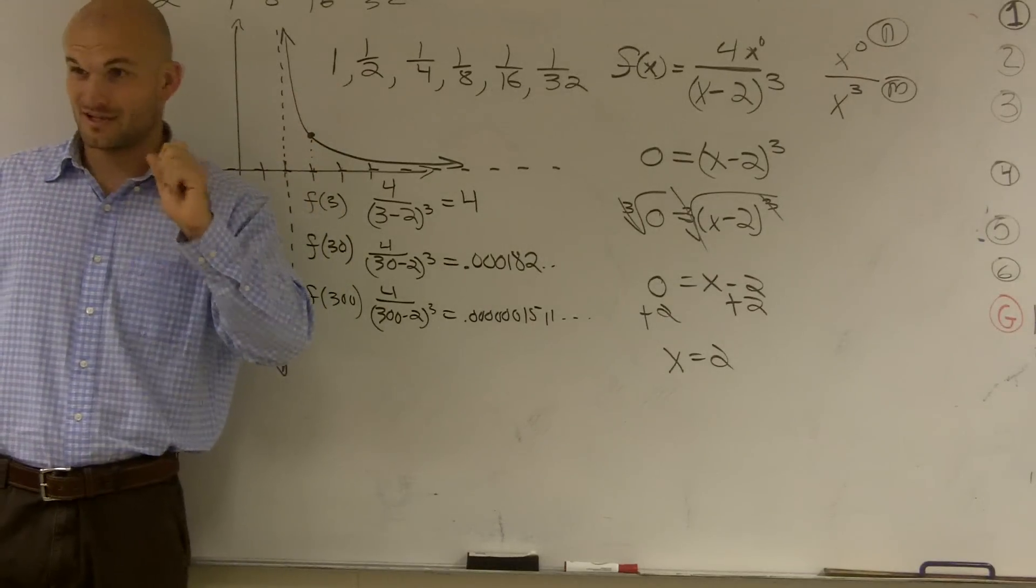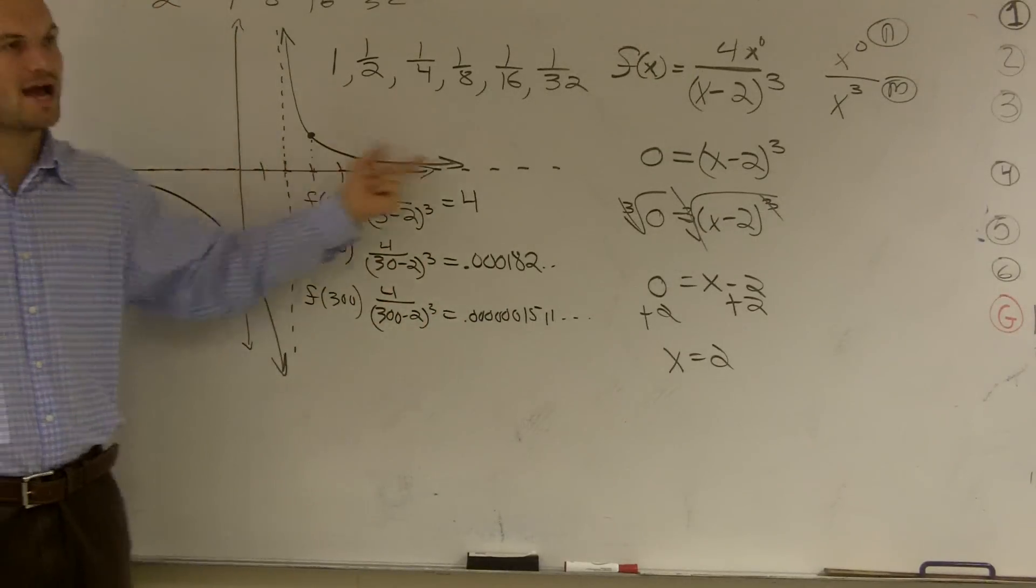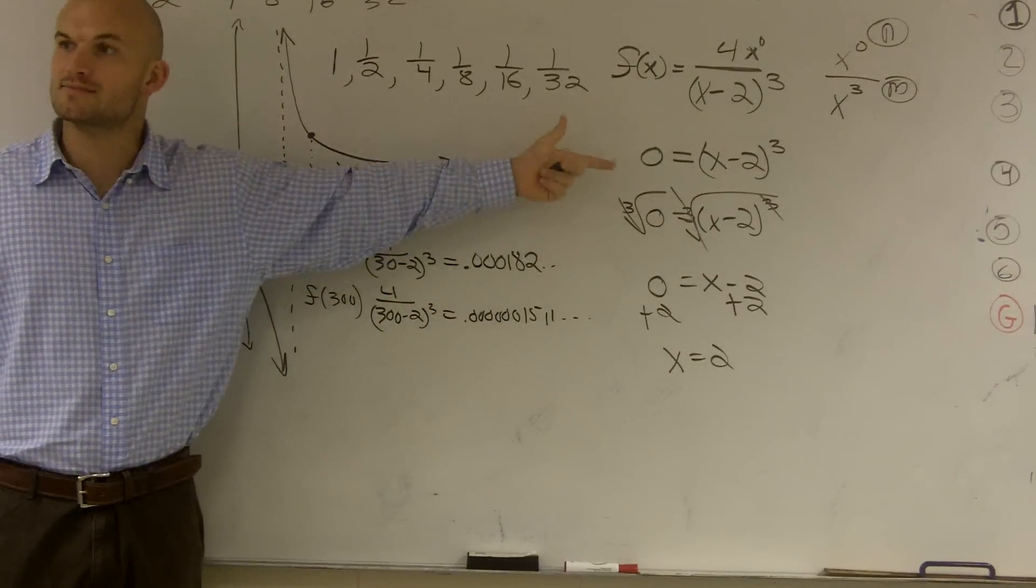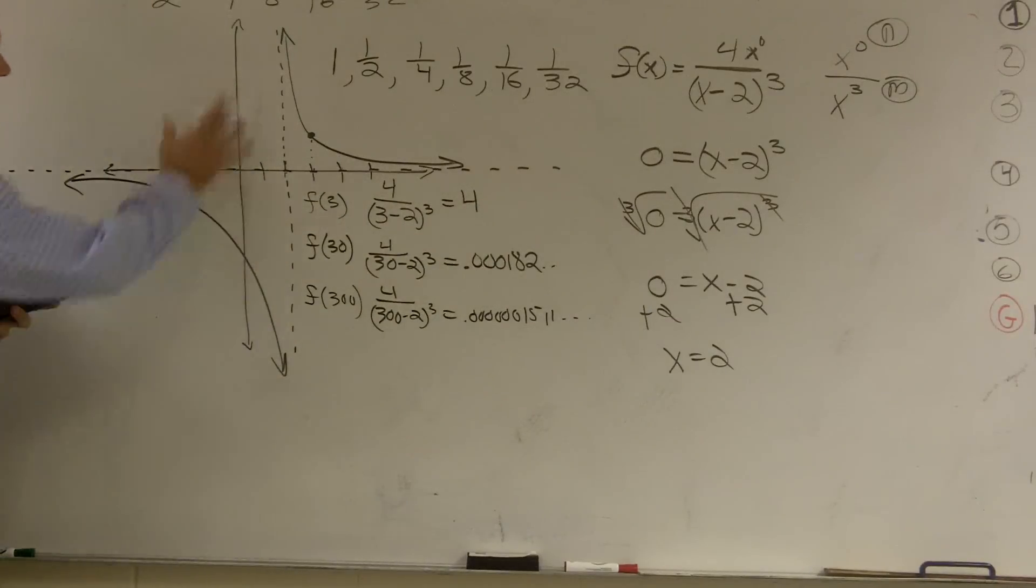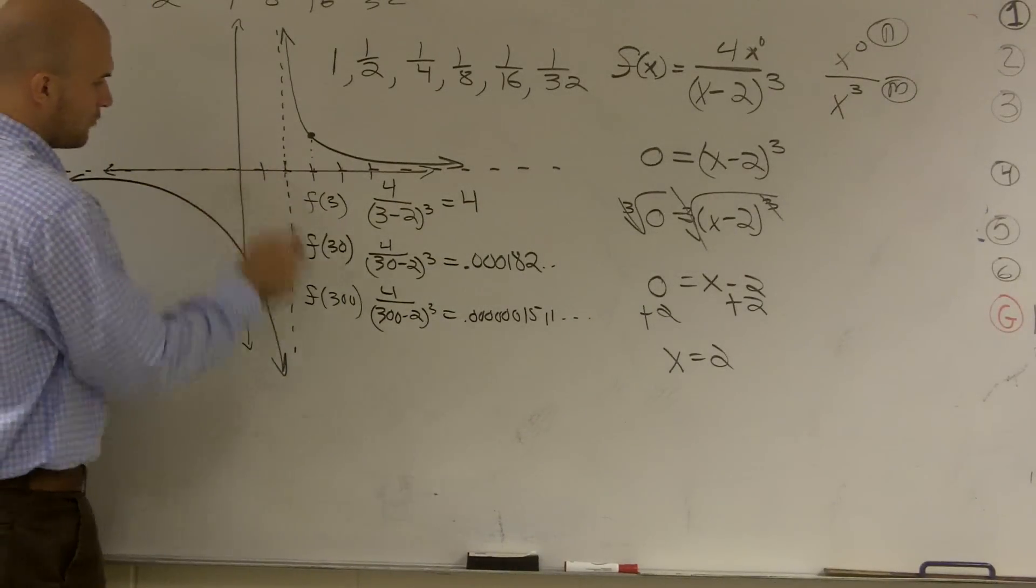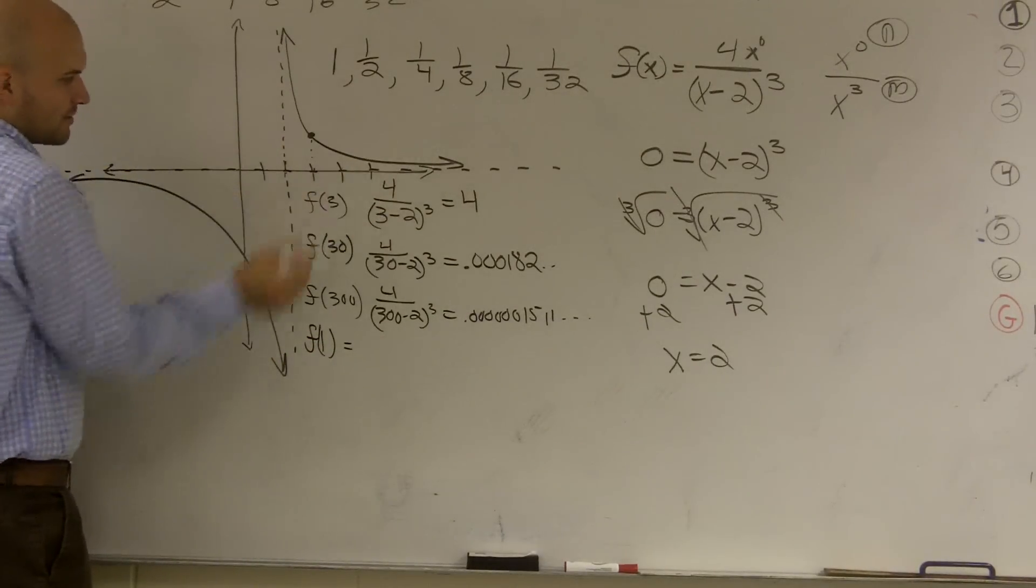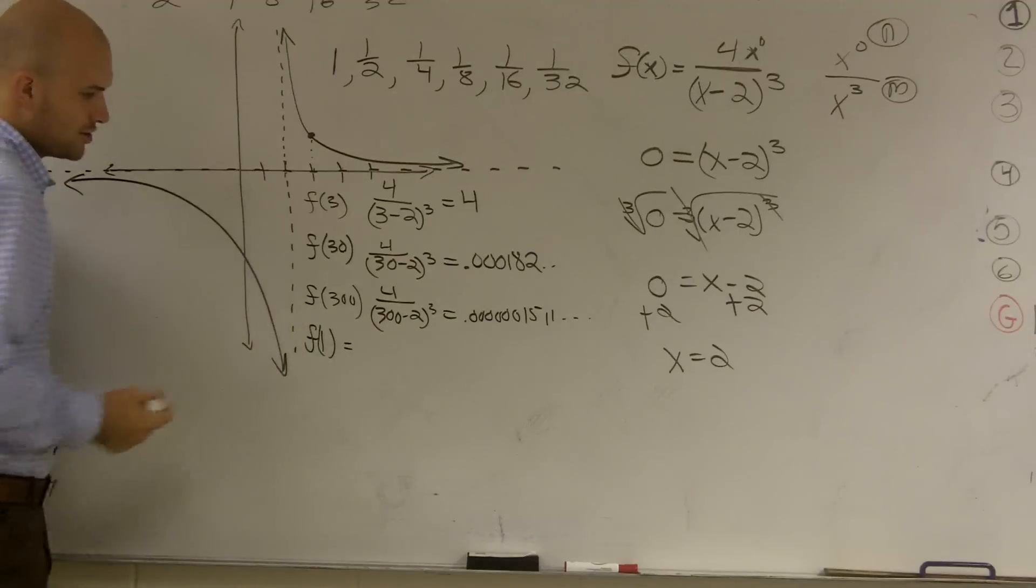Does that make sense? You guys see how close, minute, see how close you're going to get? But you're never, ever going to actually touch your asymptote. Over here, it's the exact same thing. Let's look at the point f of 1. See, this was approaching your horizontal asymptote. Let's see how it approaches your vertical asymptote.